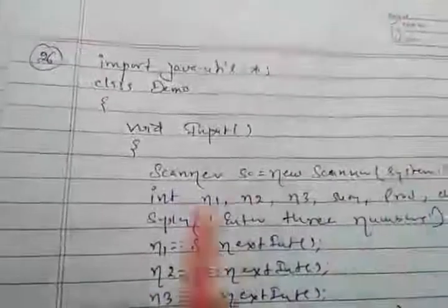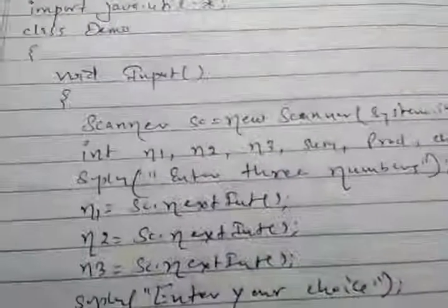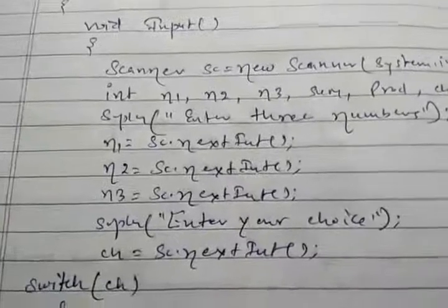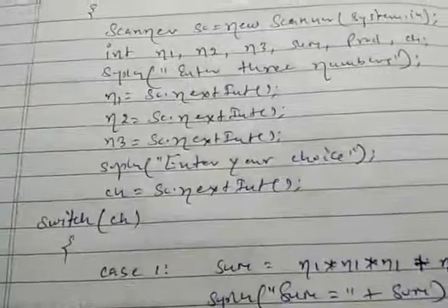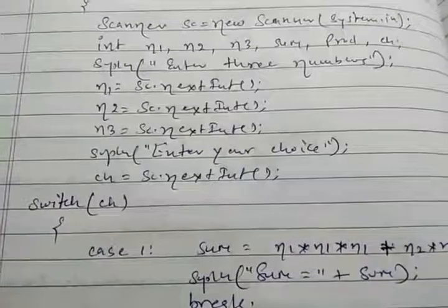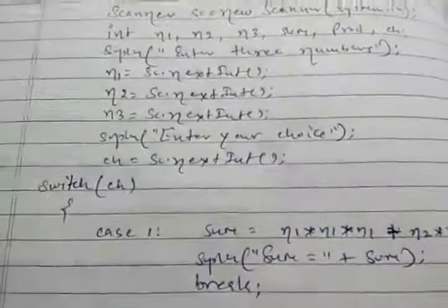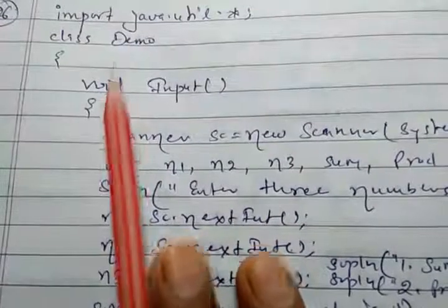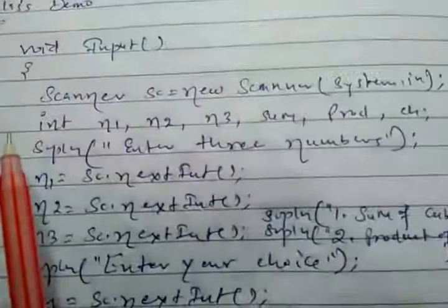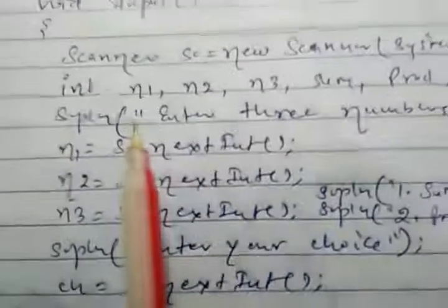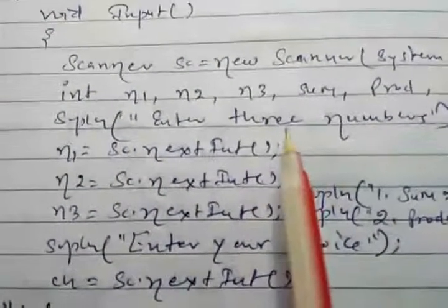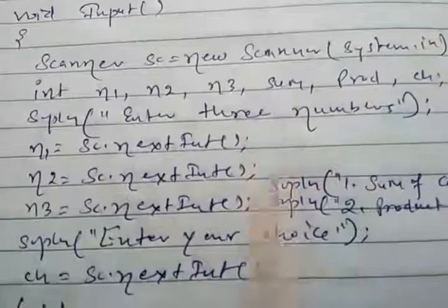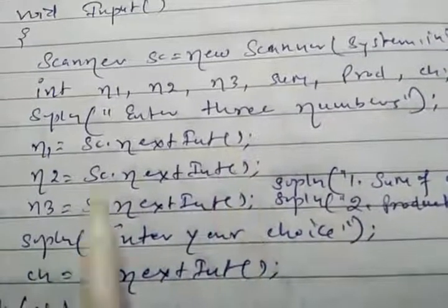Question number 26: we have to input three numbers and perform sum of cubes and product of squares. We import java.util.*, then in the input function we declare a Scanner object. The three variables are n1, n2, and n3 for input, along with sum, product, and choice. We enter three numbers: n1 = sc.nextInt(), n2 = sc.nextInt(), n3 = sc.nextInt().